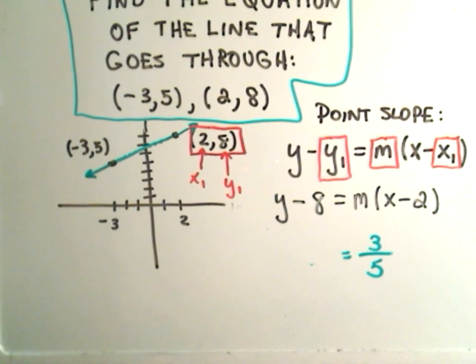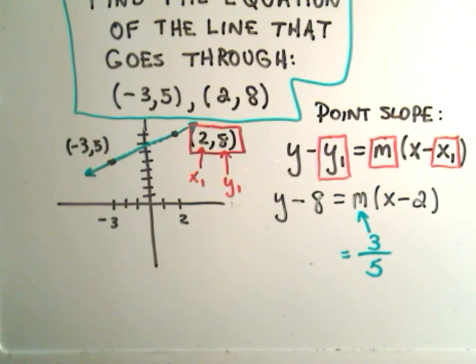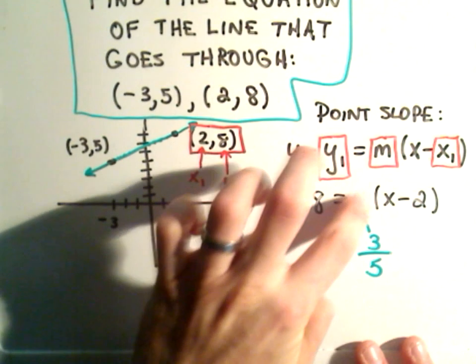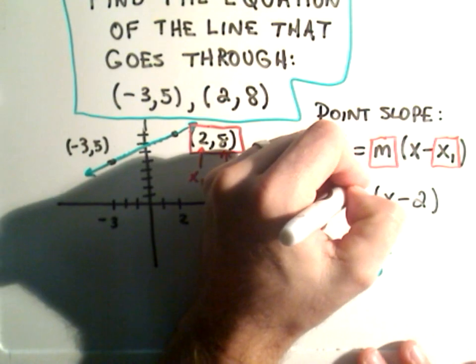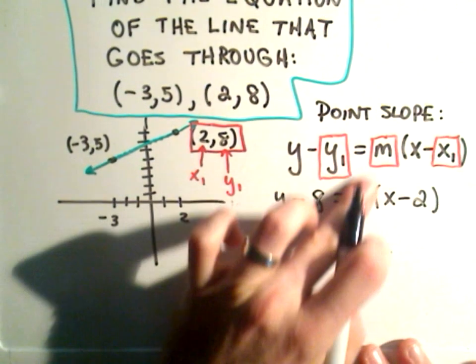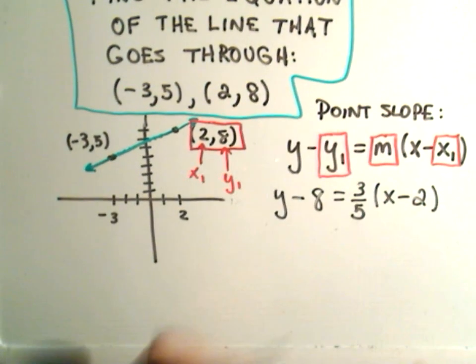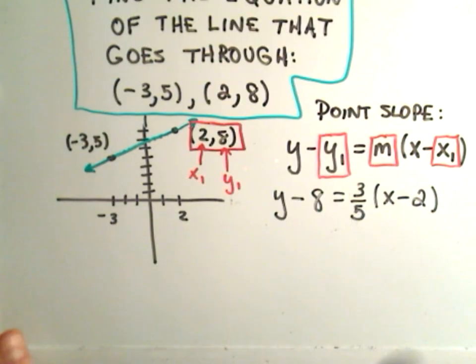So all I have to do now is plug this slope of 3 fifths in, and then I'll have the equation of my line. Okay, so let me plug in my 3 fifths, and you now have the equation of the line that goes through these two points.